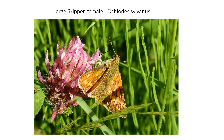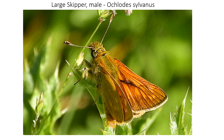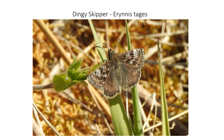Moving on to the large skipper. It isn't that much larger — they're all pretty small butterflies — but it can be recognized by the pale windows within the wing, which can be seen along the edge and also shows on the underside. The other distinctive feature of large skippers is that the tips of the antennae curl slightly.